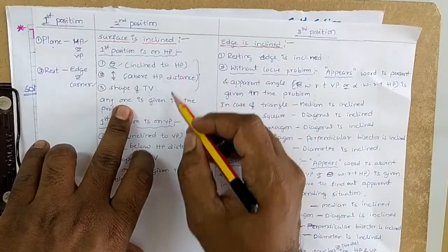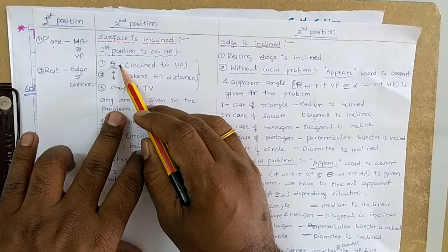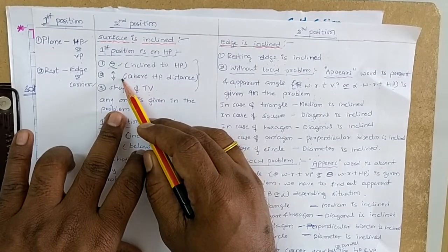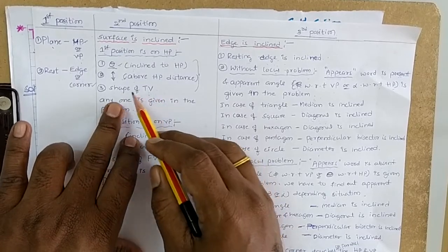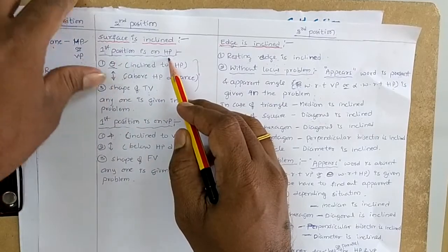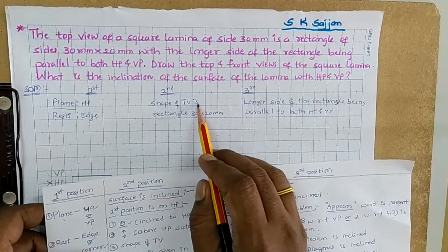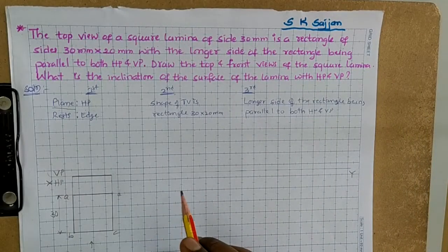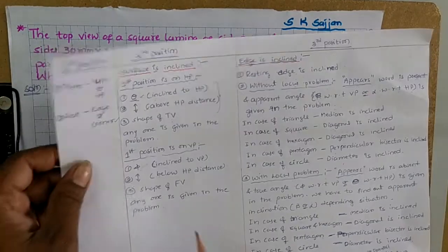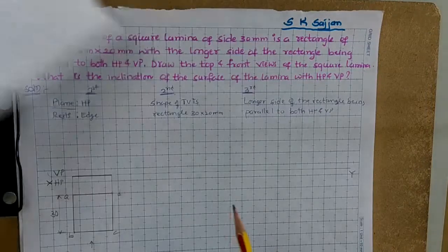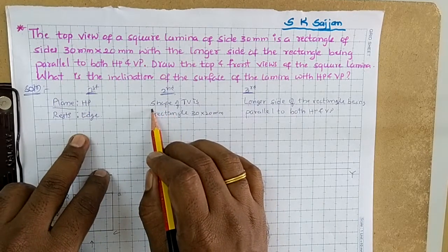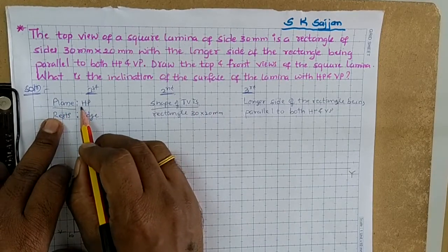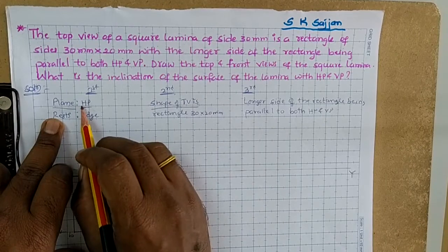From the table already discussed, any one of three conditions is given in the problem. Check if theta is given; if not, check if the above distance is given. If theta and above distance are not given, then check the shape of the top view. If the shape of the top view is given, the first position is on HP. If the shape of the front view is given, the first position is on VP. This is how we identify the plane of projection for the first portion.